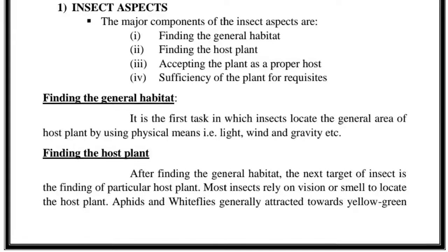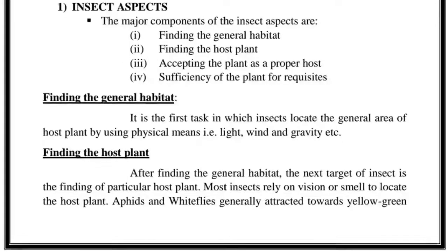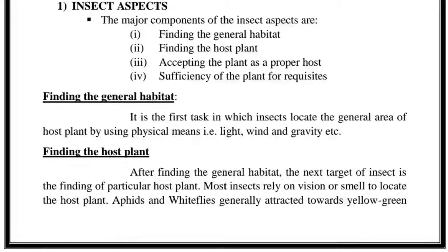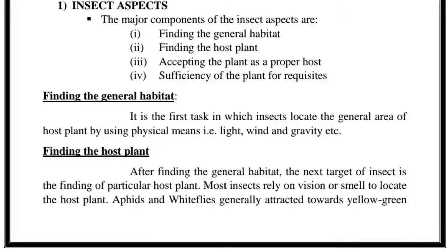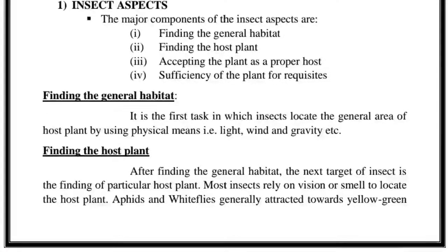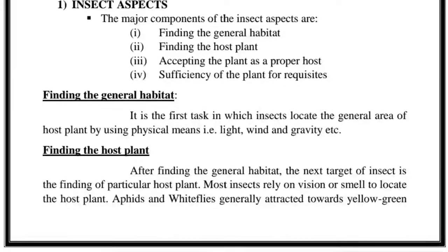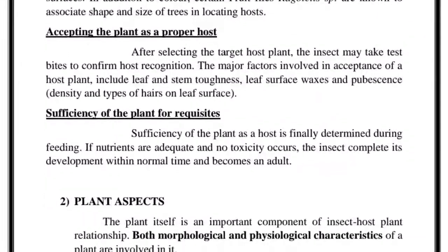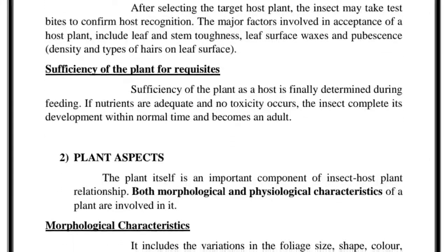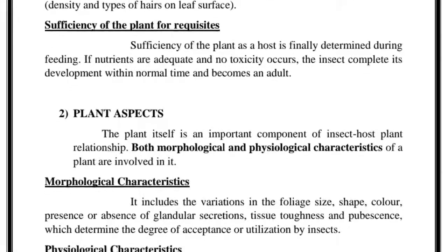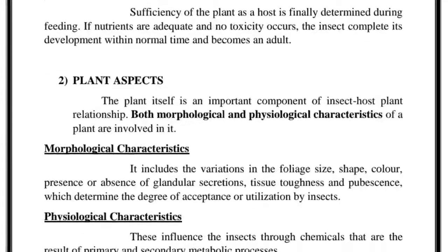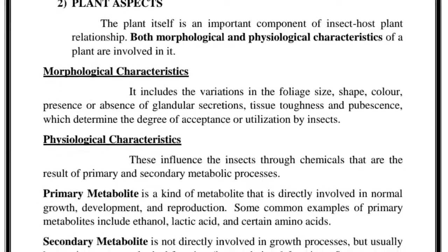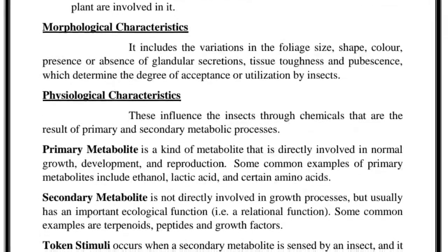Once insects are in contact with the plant, short-range stimuli will also help them to locate their host plant. When insects are in contact with plants — meaning they sit on the host plant — they have tactile receptors. These tactile receptors are excited by stimuli and help in locating the chemicals through chemoreceptors on tarsi, antennae, and mouthparts. So the first step was finding the general habitat, and the second step is finding the host plant.